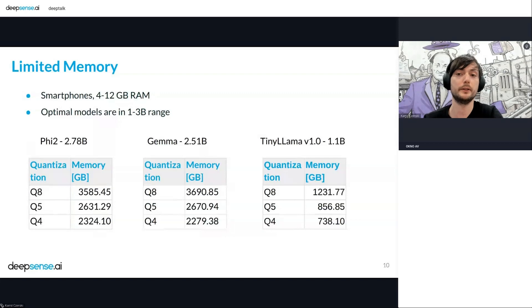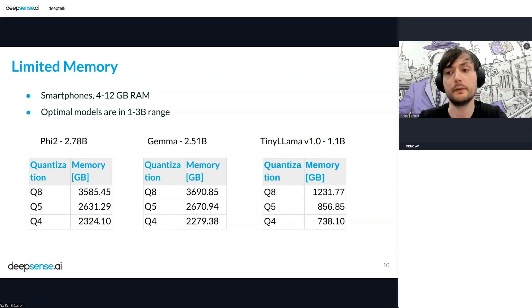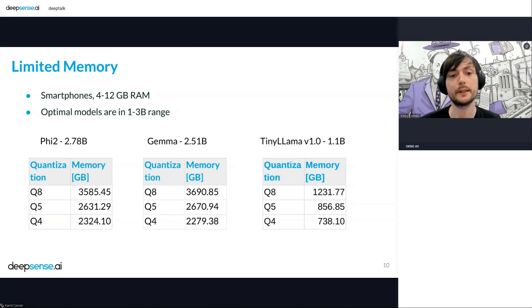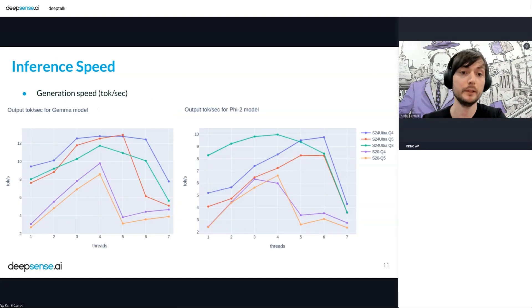The biggest constraint in this entire pipeline is actually the memory of the device, because these models are heavy. We limited ourselves to models in the range of one to three billion parameters. It is possible to run models like 7 billion, but only on higher-end devices with more memory and with lower quantization levels only. For example, the Phi-2 model, which has close to 3 billion parameters in Q8, weighs around 4 gigabytes. We also need to remember that the OS and other components also need memory alongside the model.